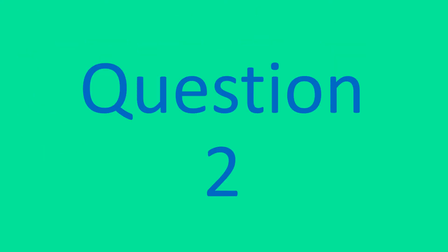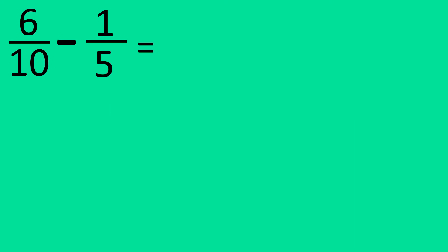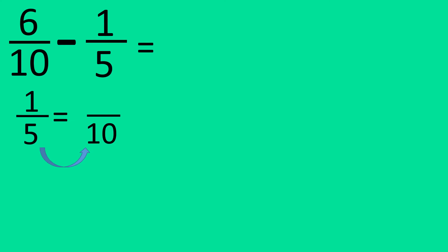Question number two. Here we have six over ten minus one over five. One over five will have to be changed so that it gets a denominator of ten. If you times five by two, then you get ten, so we're going to have to do the same to the top. When you times one by two, you get two.